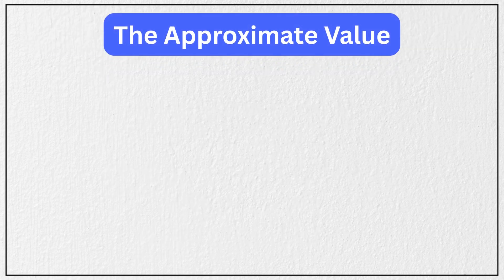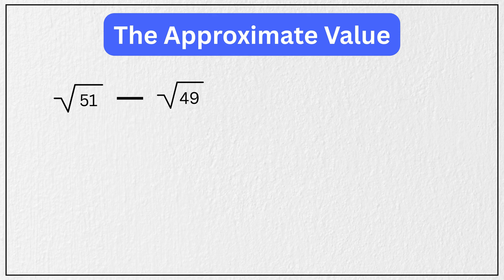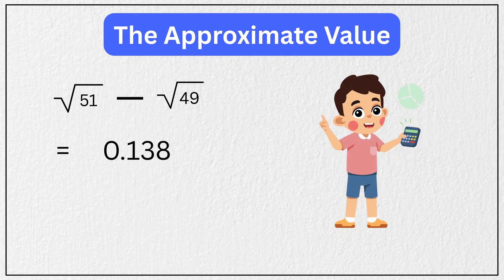So the approximate value of √51 - √49 is around 0.138. And if you check this using a calculator, you'll find that the actual answer is very close to this value. So our approximation works well.